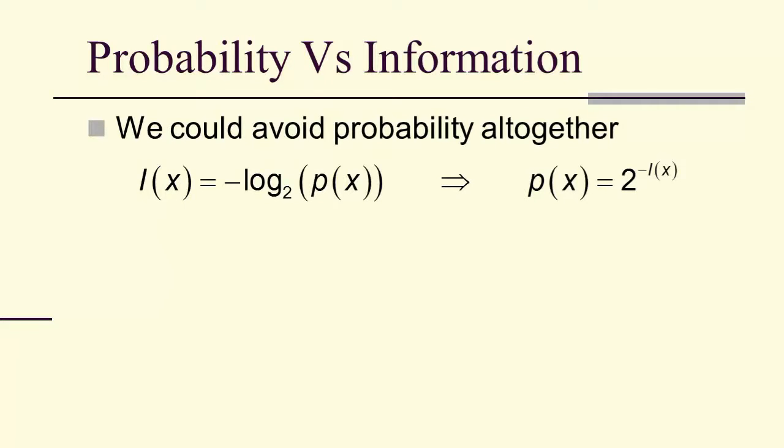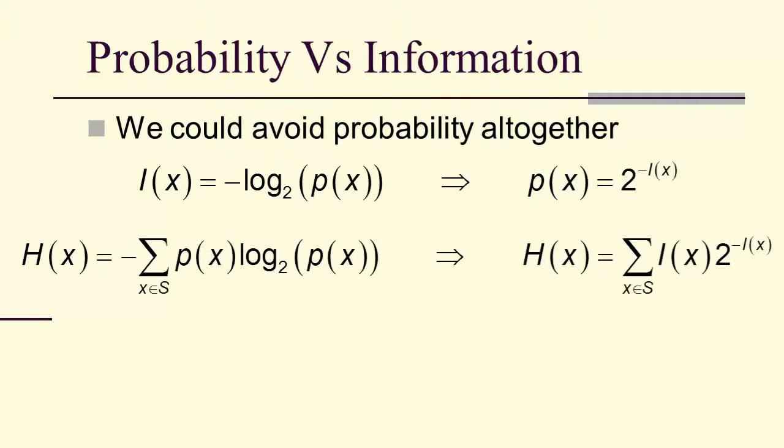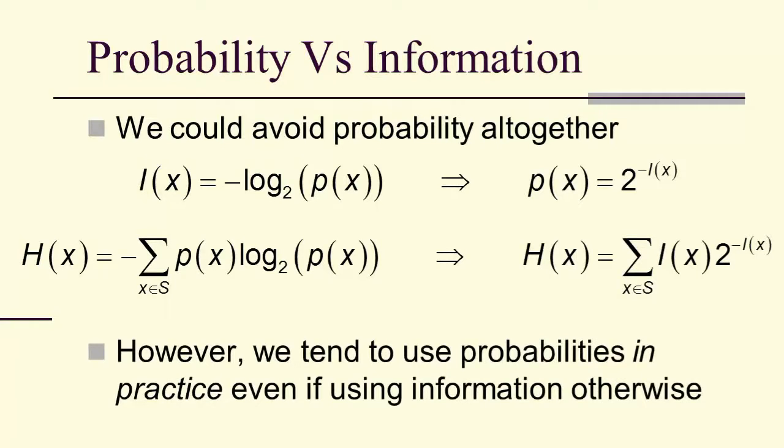For instance, we could look at information instead as a function of probability. We could say probability is a function of information. Entropy could be expressed completely in terms of surprisal or self-information. However, in practice, we use probabilities.